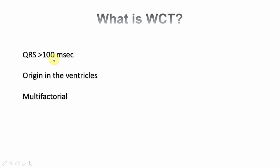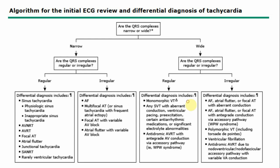Wide complex QRS usually occurs because the origin of the impulse is in the ventricles. The problem is mostly in the heart, but there are other conditions — such as toxicological cases or metabolic problems like hyperkalemia — that can also give rise to wide complex tachycardia.